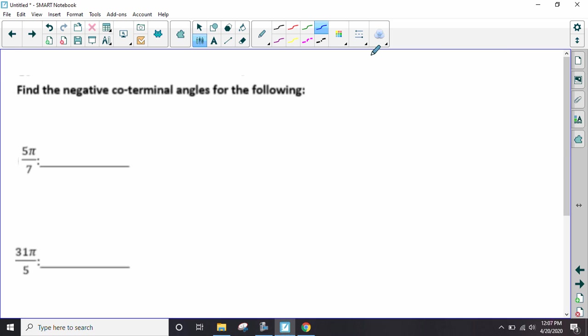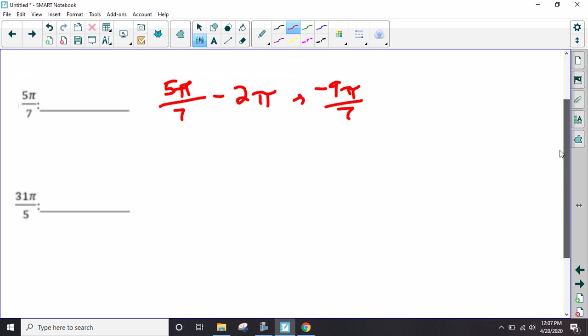Now same thing if we're going the opposite direction. If we're trying to find the negative ones, well, we're going to have 5π over 7 minus 2π. We're subtracting this time. Again, use the calculator. 5 over 7 minus 2. It will help us. We get negative 9π over 7.